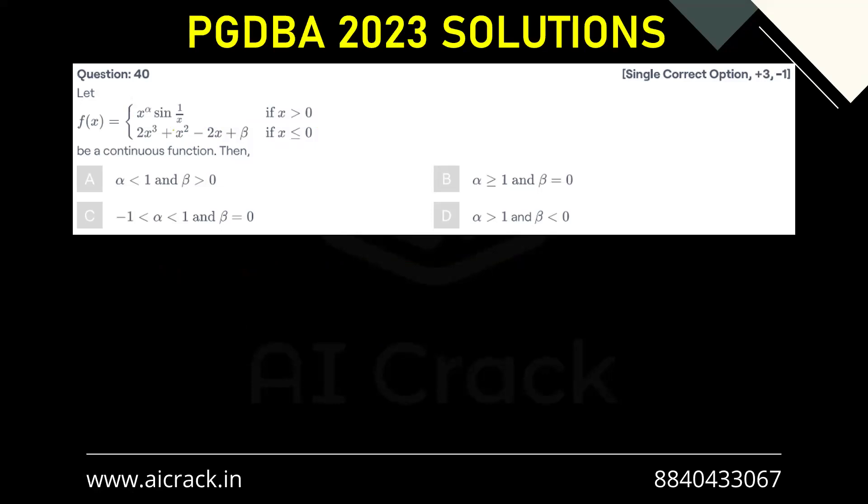Let's solve question number 40. Let f(x) be a continuous function then, and f(x) is a piecewise function with critical point at x equals 0.